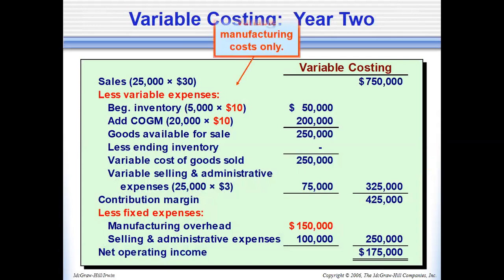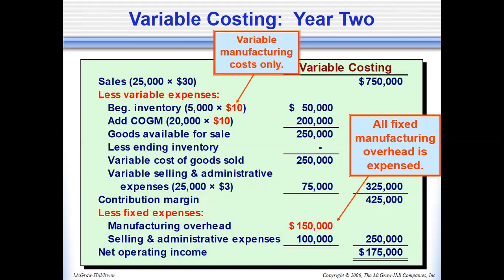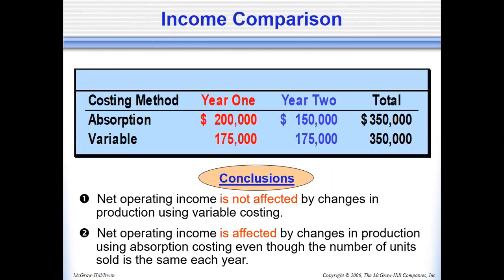That $25,000 difference equals 5,000 units times $5 per unit. All fixed manufacturing overhead is expensed. Looking at the income comparison as a whole for year one and year two, whether there are changes along the way, the totals must be equal over the two-year period. It's just a matter of how much was recognized in year one versus year two.